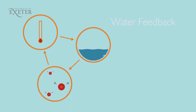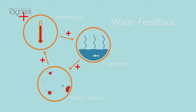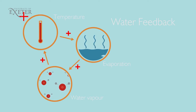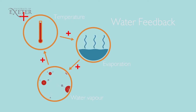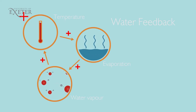We can conceptualise this positive feedback in a more abstract way by means of a feedback diagram. Our feedback diagram has three elements: temperature, evaporation and water vapour. If we increase temperature, then evaporation increases. Increasing evaporation, in turn, increases the amount of water vapour. And the increasing amount of water vapour increases the temperature — increasing temperature increases the amount of evaporation, and so on. This is a really good example of positive feedback. Of course, I mean positive in a mathematical sense, not positive in the sense that this kind of feedback is a good thing.